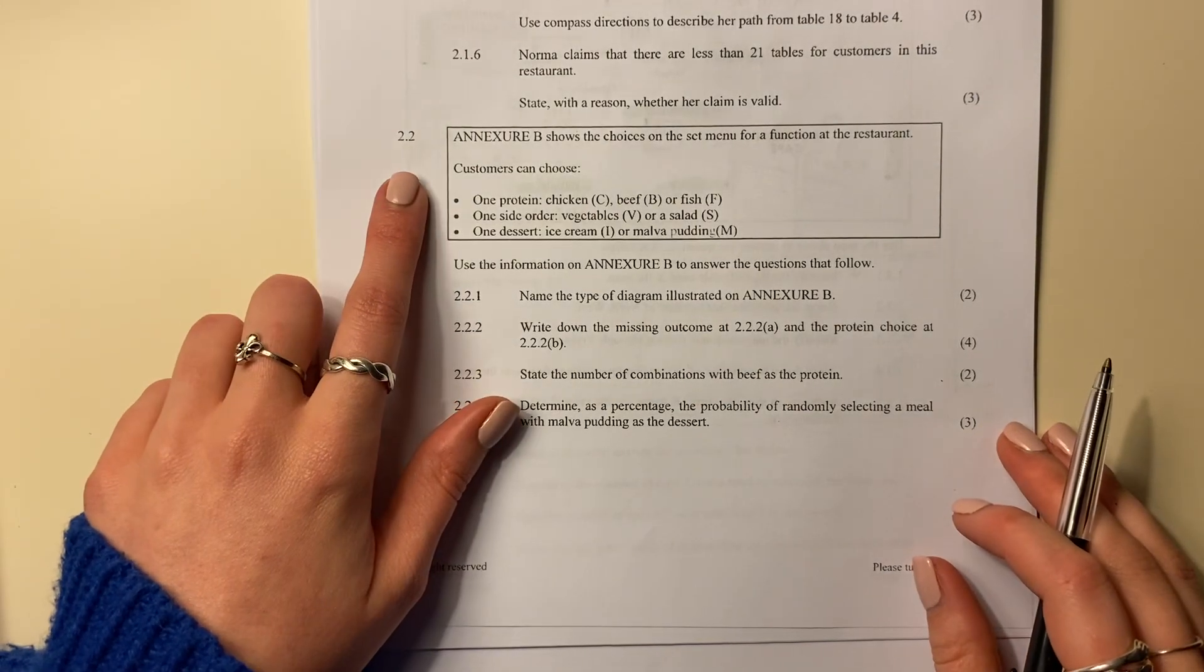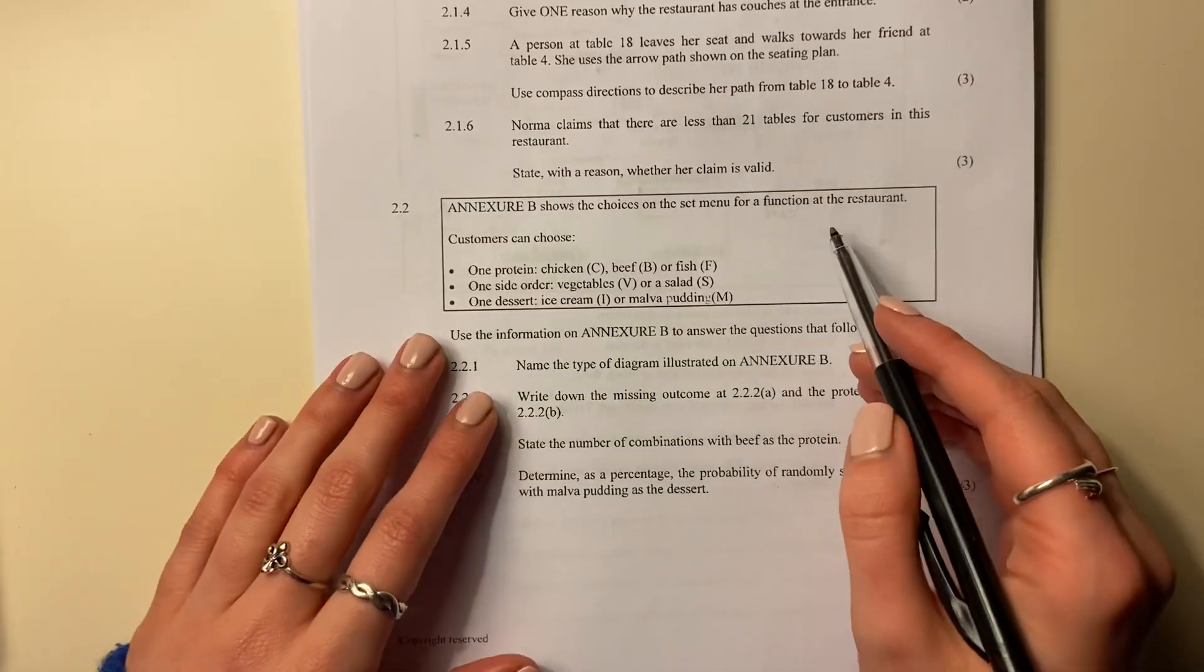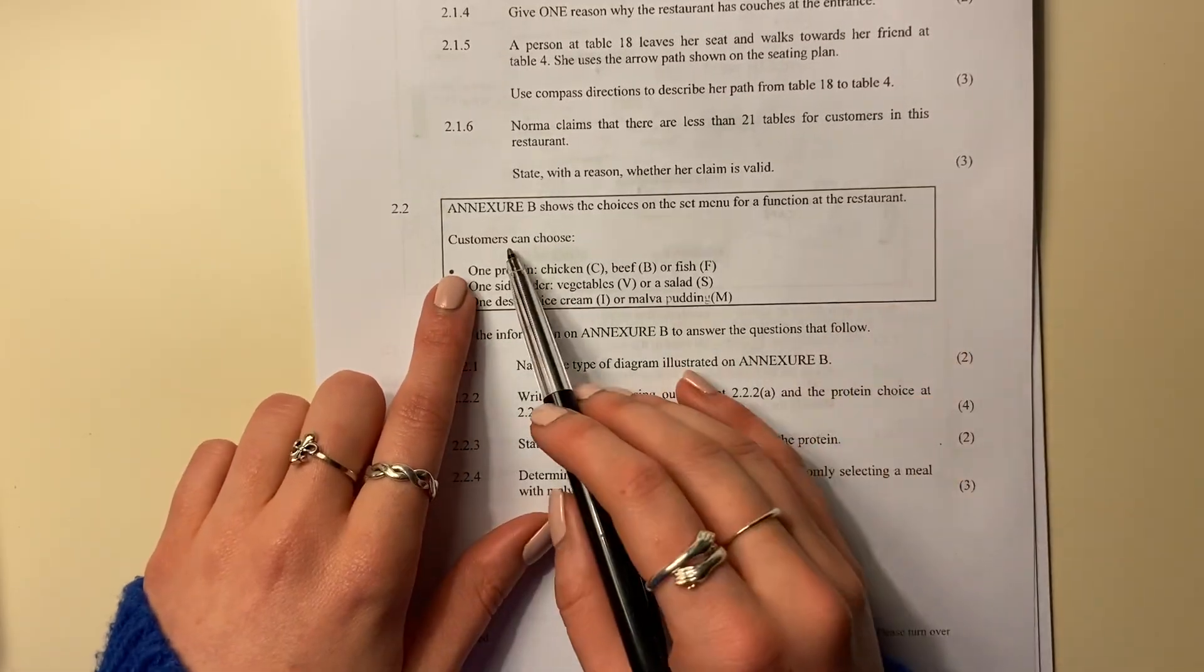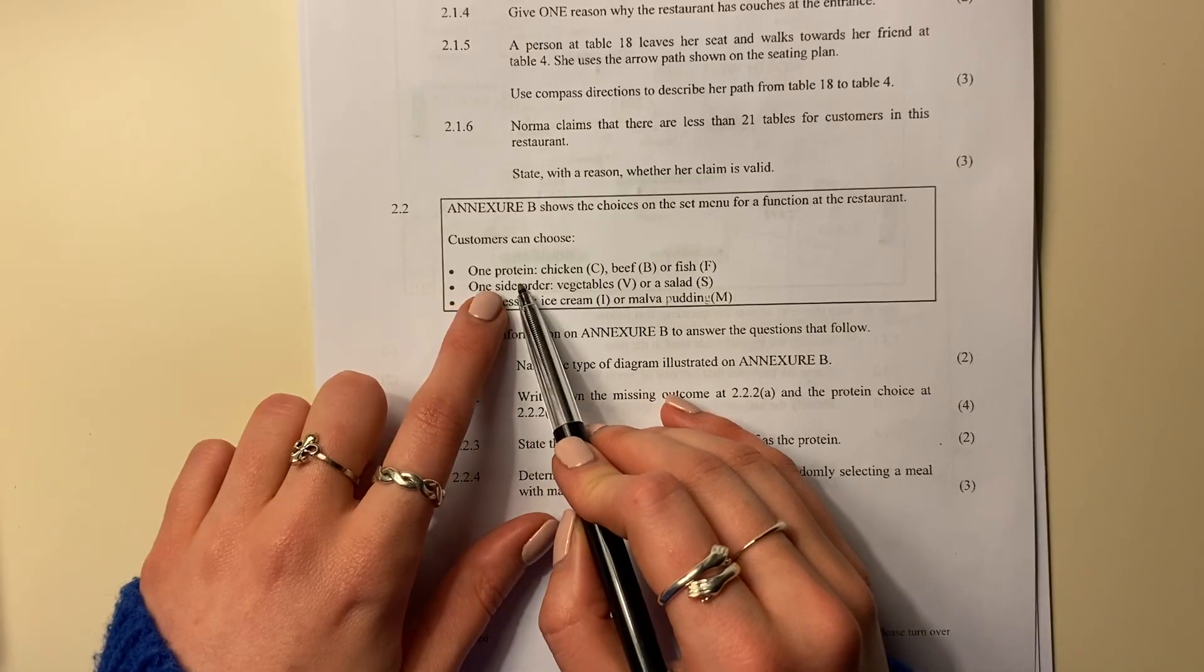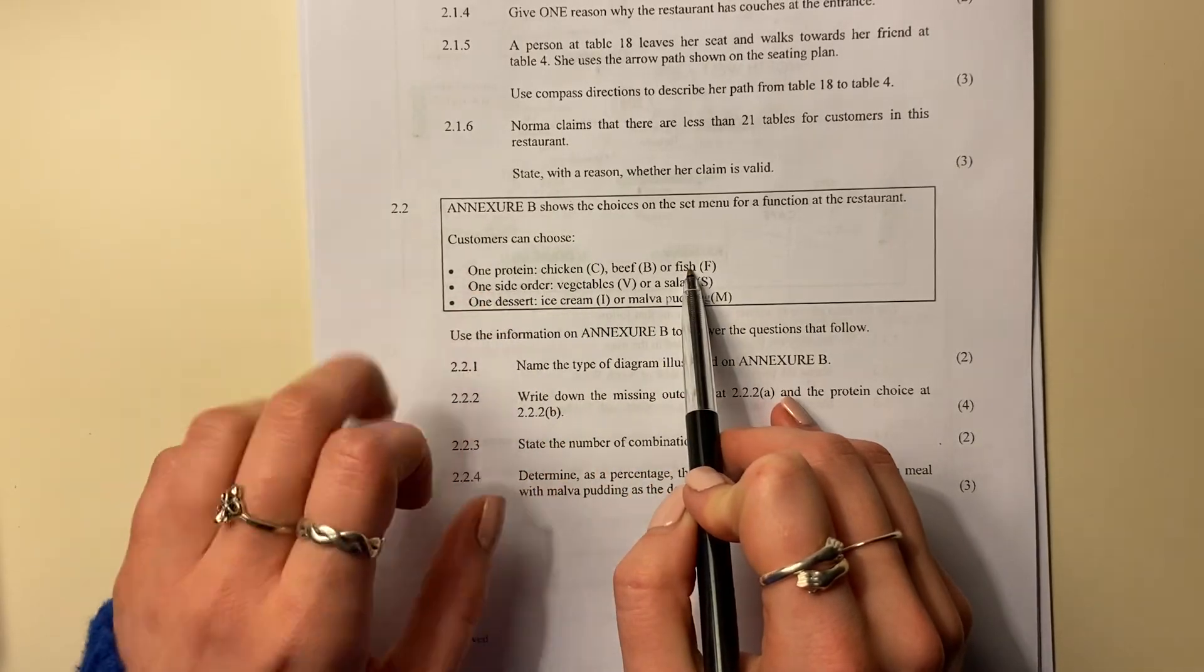Right, 2.2. Annex Tip B shows the choices on the set menu for function at the restaurant. Customers can choose one protein - chicken, beef, or fish. So three options, and I'm just going to write that there so that you can see that.